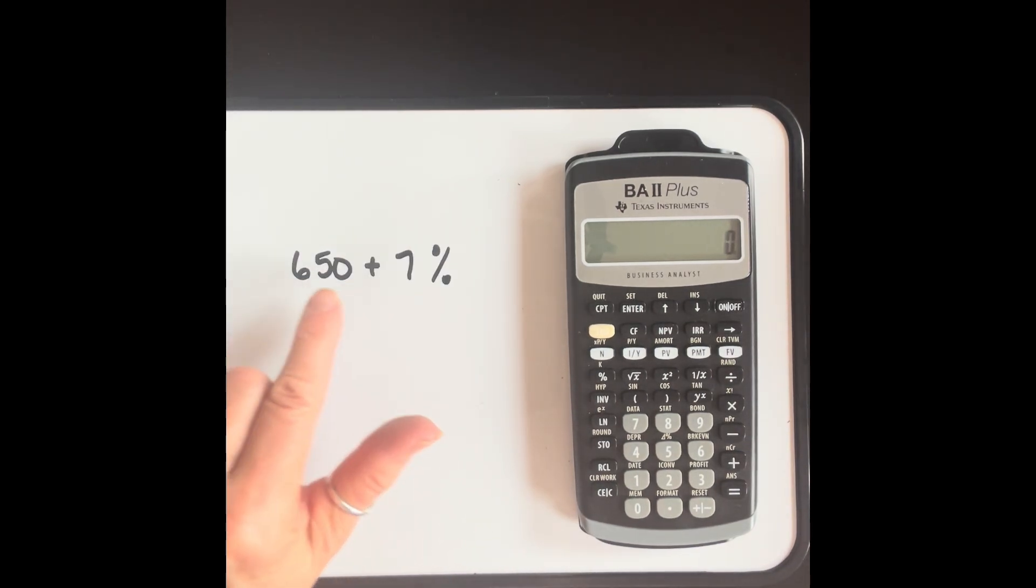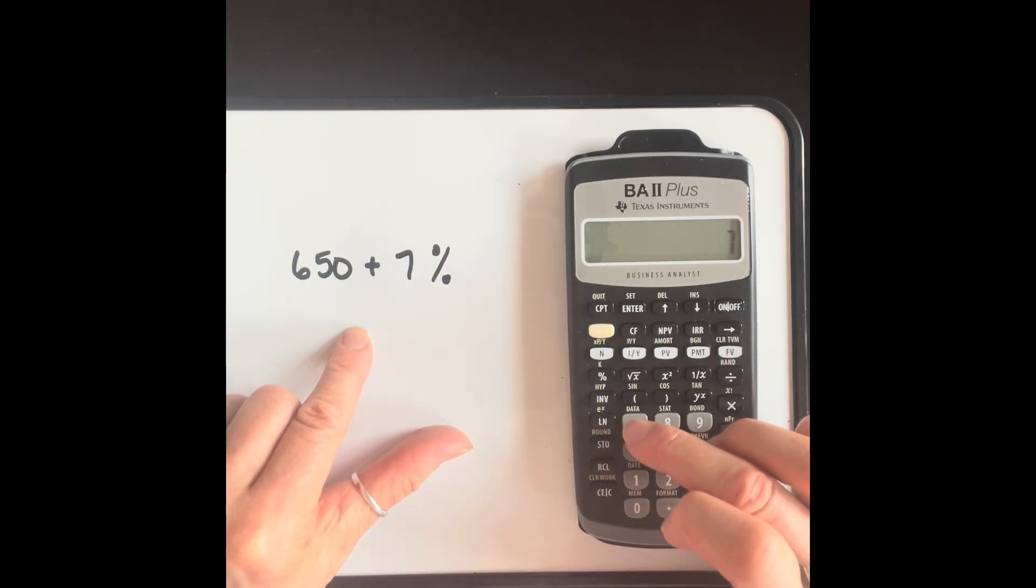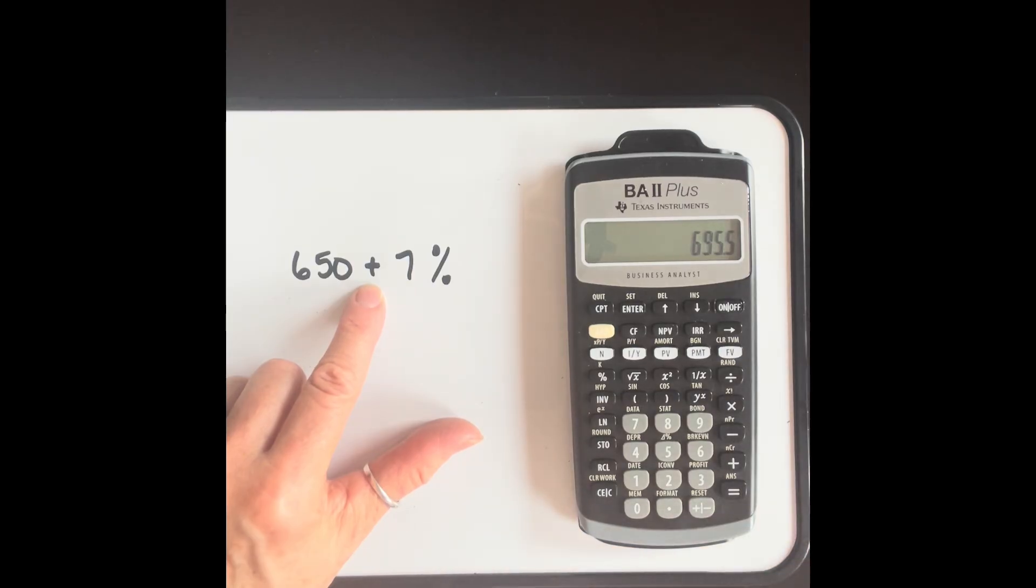Another way that you can use the percent key is if you're adding a certain percent to a number. So if you're marking it up a certain percent, or you're finding the sales tax, whatever the case may be. In this example, we have 650 plus 7%. So we're going to go 650 plus 7%. That tells you what 7% of 650 is. In order to do the addition, press equal to complete the calculation.